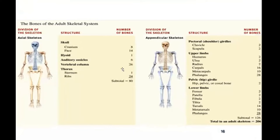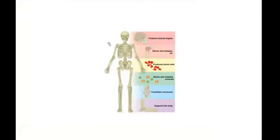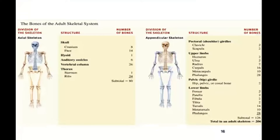You will understand the structure of the 206 bones — or 206 organs — in the human body. These organs have some function and location. For example, in the skeletal system there is the axial skeleton and the appendicular skeleton.